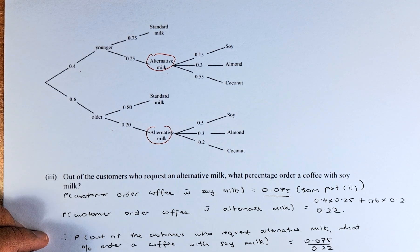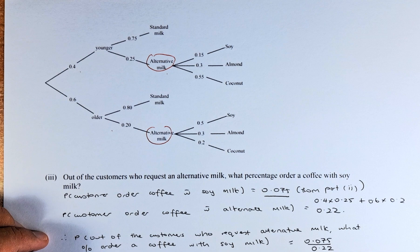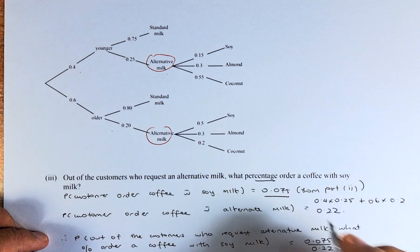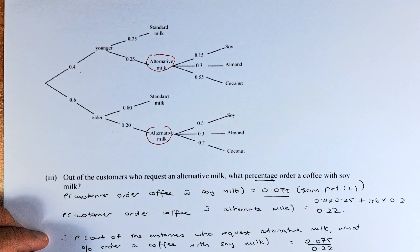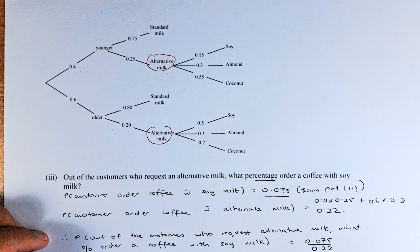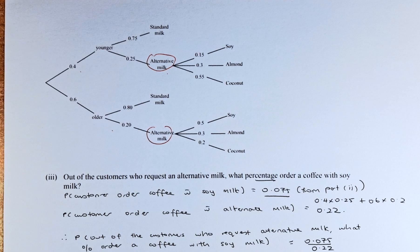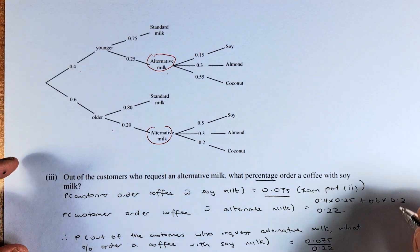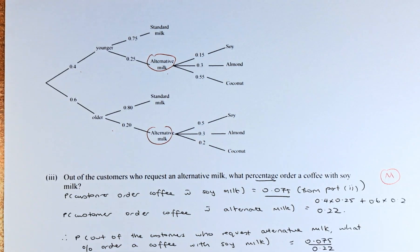Put your calculator and the answer is going to be 0.3409. Because they asked for percentage, convert to percentage is going to be 34.09 or round them up, 34.1% of the customer who request alternate milk, the percentage is 34.1% order a coffee with soy milk. Have a go again and if you can get this question right, you get another merit. So the first three questions is going to be achieve, merit, merit.